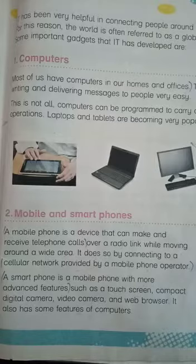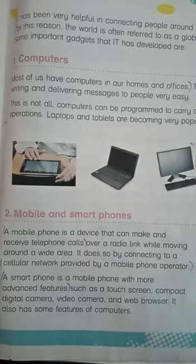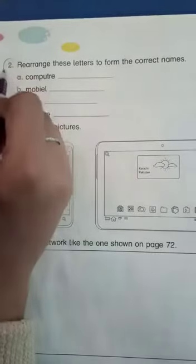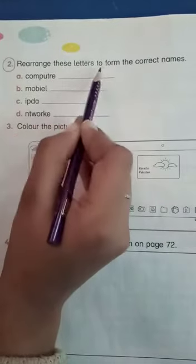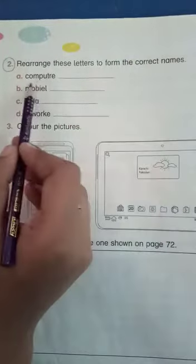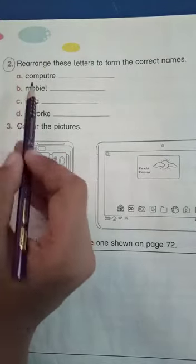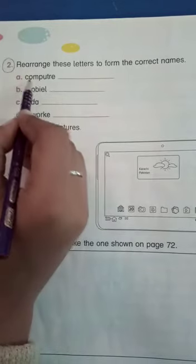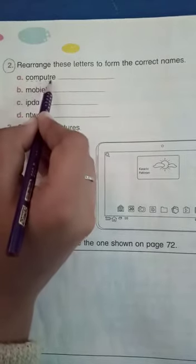Now let's go to homework. Come to page number 74. Question number 2 is your homework — rearrange these letters to form the correct names. You have to rearrange the letters to find the correct names. The first one is: C-O-M-P-U-T-E-R.